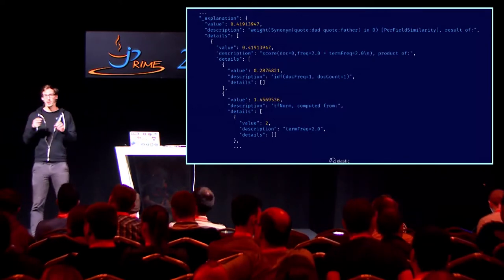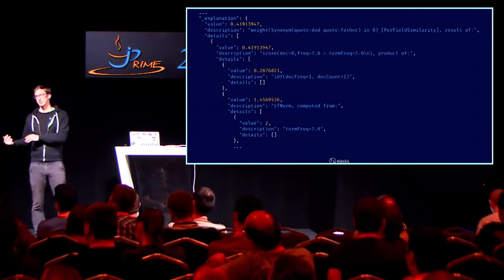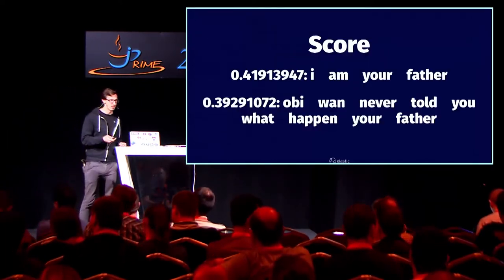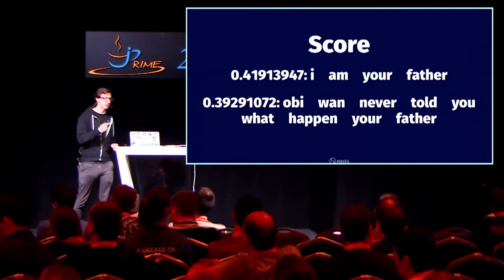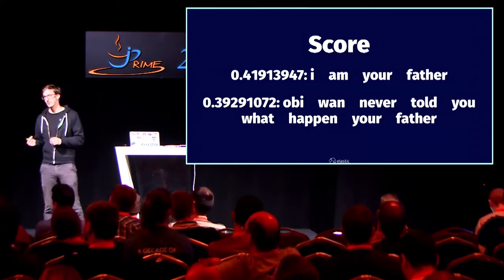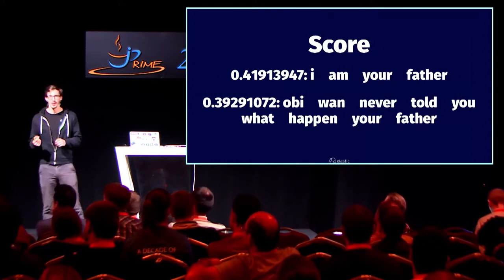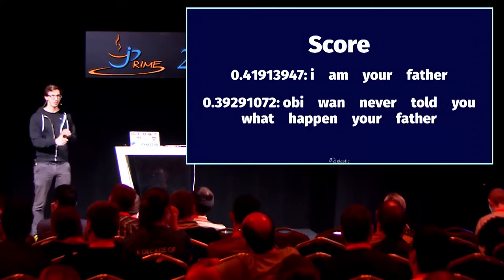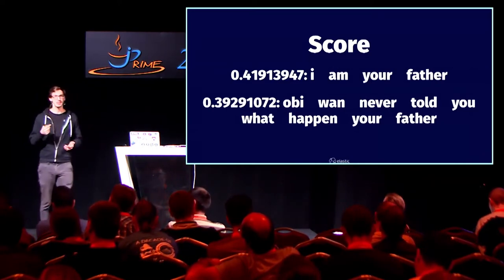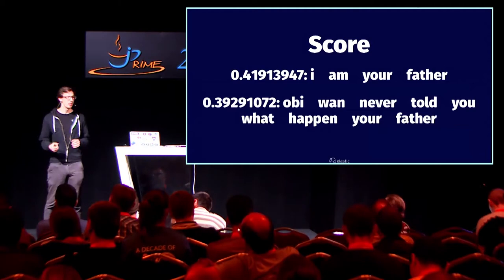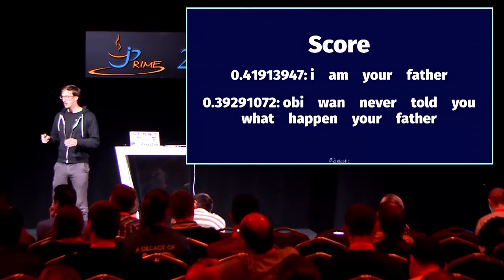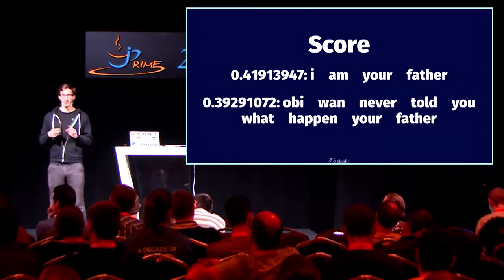If I'm searching for 'father' and running that query, these are my scores — one is scored higher than the other. Why is the first one scored higher than the second? Yes, it's just shorter. The term frequency is the same — both contain 'father' once. The inverse document frequency is the same because we're searching for 'father' in both. Just the field length norm is different because the first one is a bit shorter than the second one. Though you can see the difference is very minor — it's 0.02 or something like that. But there is a difference, and it all plays together, and that's how you calculate it.